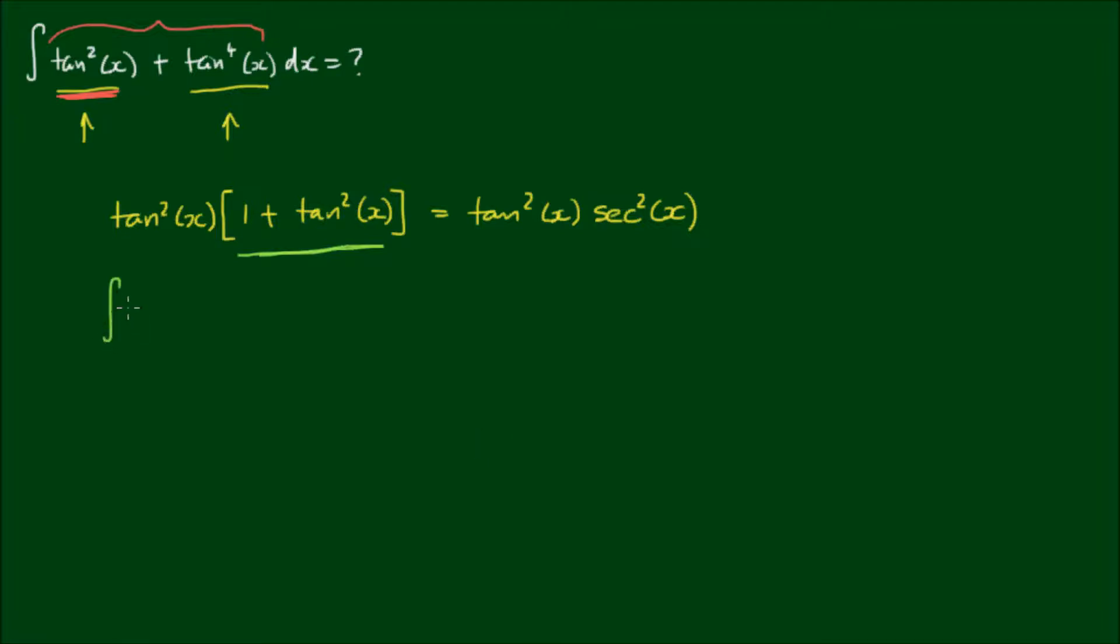So now we are simply integrating tan²(x) times sec²(x) with respect to x. But I can make this integral even simpler by letting u equal tan(x).